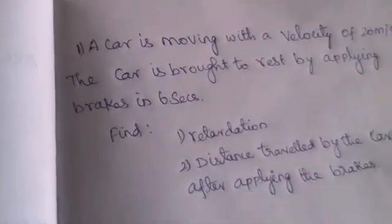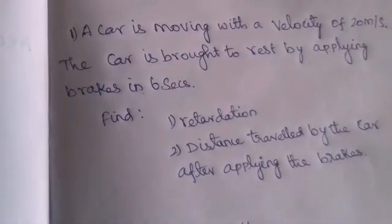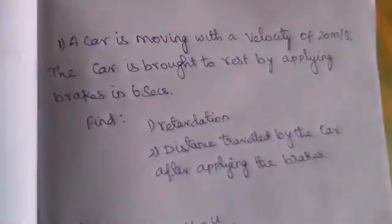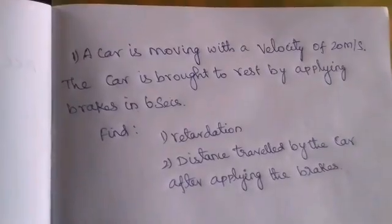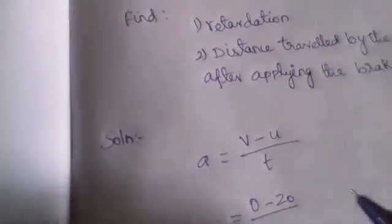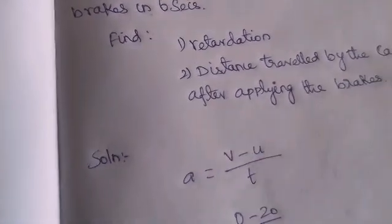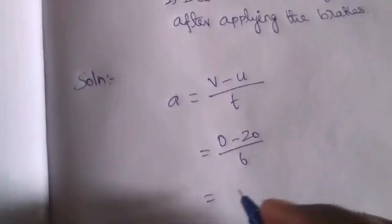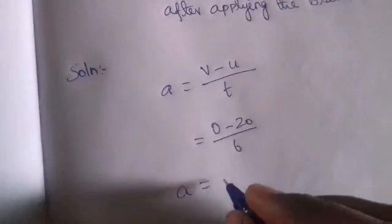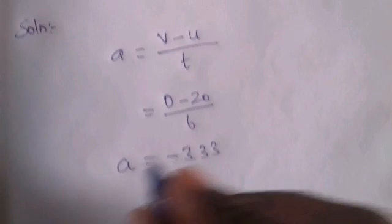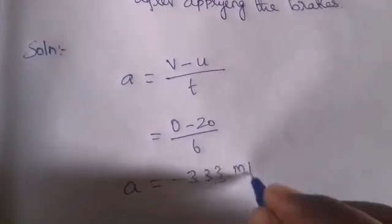Final velocity: brakes applied, so zero. Initial velocity is 20 meters per second. So zero minus 20 meters per second divided by time taken, 6 seconds. Therefore, acceleration a is minus 3.33 meters per second squared.